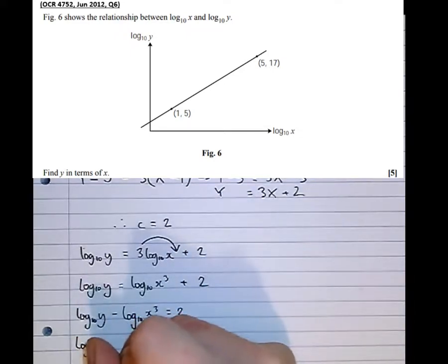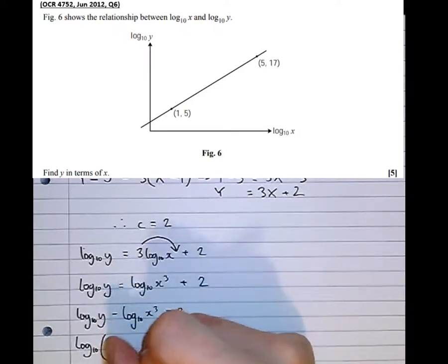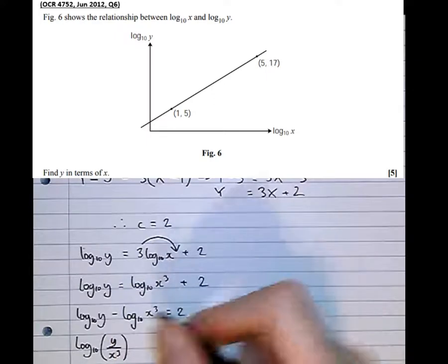Using the subtraction rule, when I subtract two logarithms, I can divide their contents. So log to the base 10 of y over x cubed equals 2.